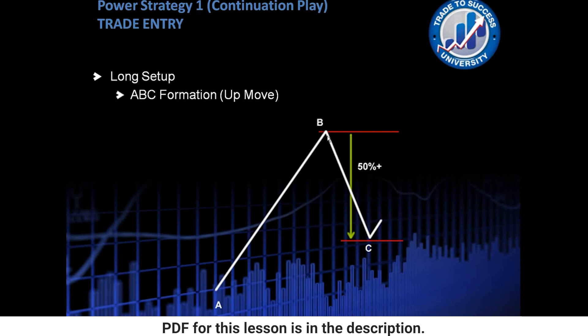If this had only gone down from point B down 40 pips, that would not be what we would want and we would negate this as any potential trade for us. It needs to go down at least 50%.